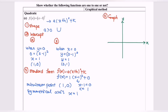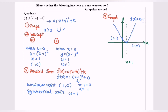Now we're going to sketch the graph. First, referring to the shape, we have a U-shape. Second, we plot the intercepts: the x-intercept is at (1, 0) and the y-intercept is at (0, 1). We also have the minimum point at (1, 0) and the symmetrical axis at x = 1. So this will be our graph of f(x) = (x − 1)².